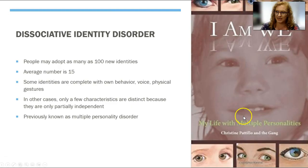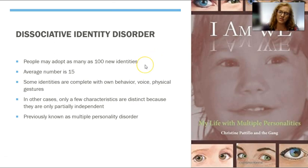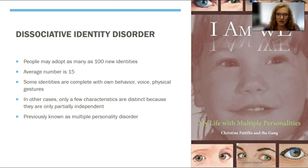Let's talk about DID, or dissociative identity disorder. I share with you a book called 'I Am We' by Christine Petillo and the gang, as she calls them. She has multiple personalities, and I've linked a video where she talks about her disorder. People with DID may adopt as many as a hundred new identities, though the average number is about 15. Some identities are complete with their own behavior, voice, and physical gestures, while in other cases only a few characteristics are distinct because they are only partially independent of each other.